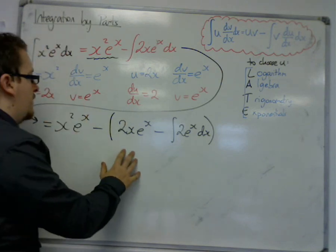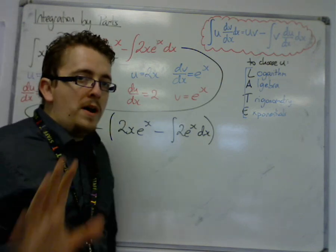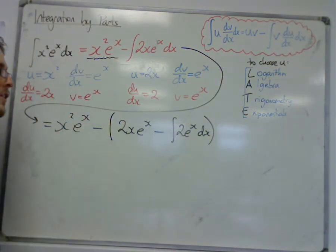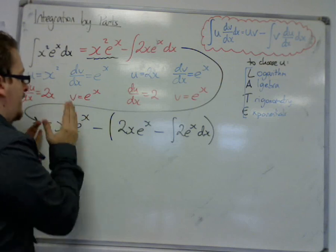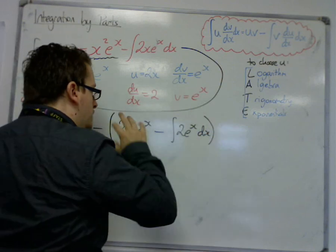So what I have now, and this is why brackets are going to be very useful, because you have all these minus signs flying all over the place. What we have now is x squared e to the x, take away this big bracket here.